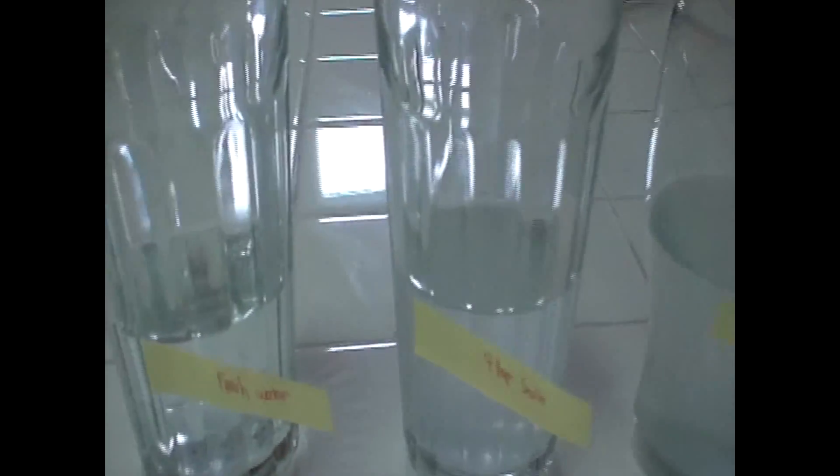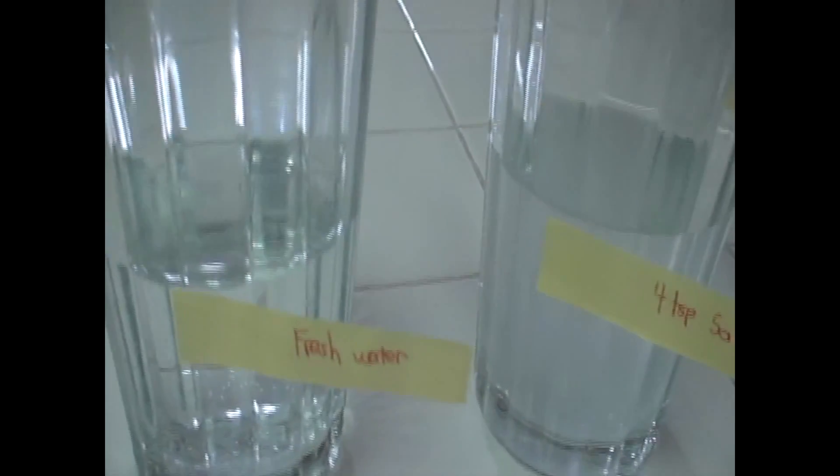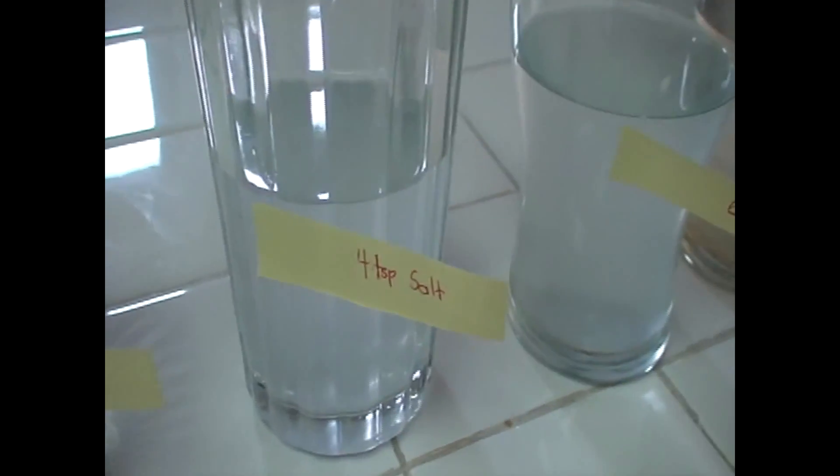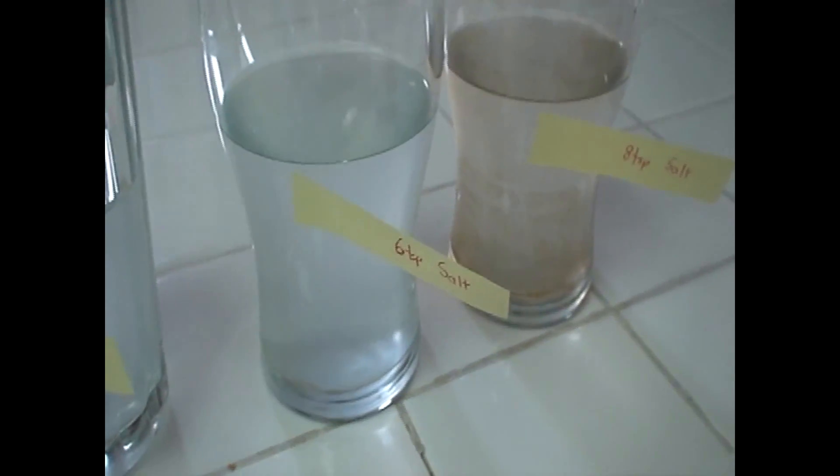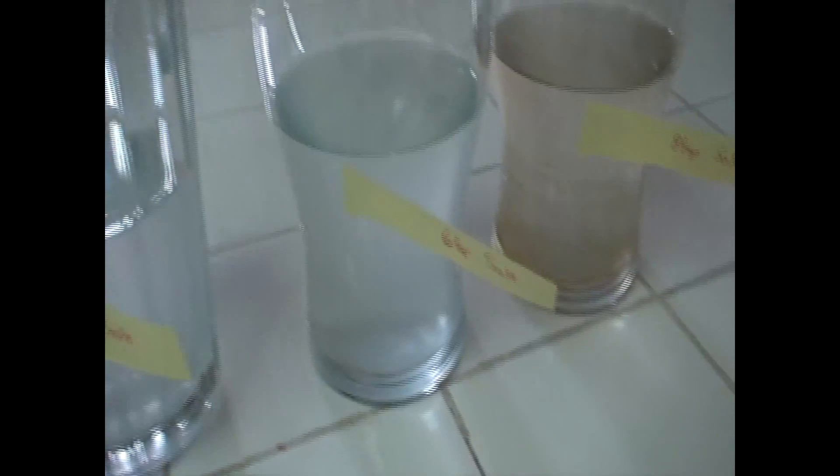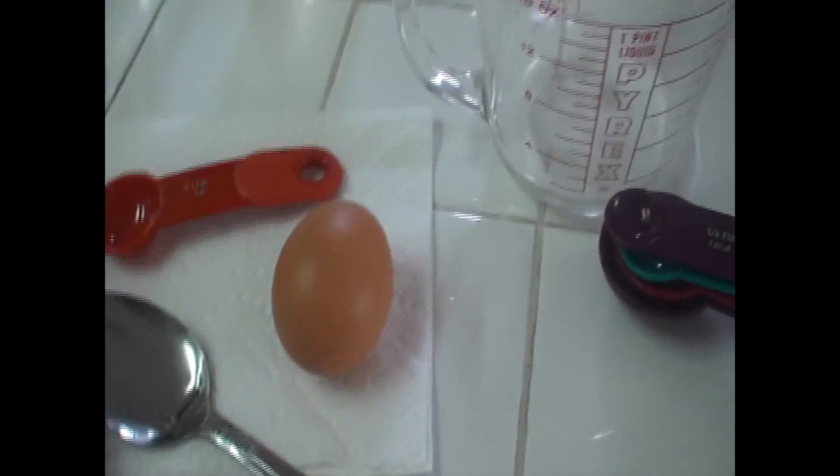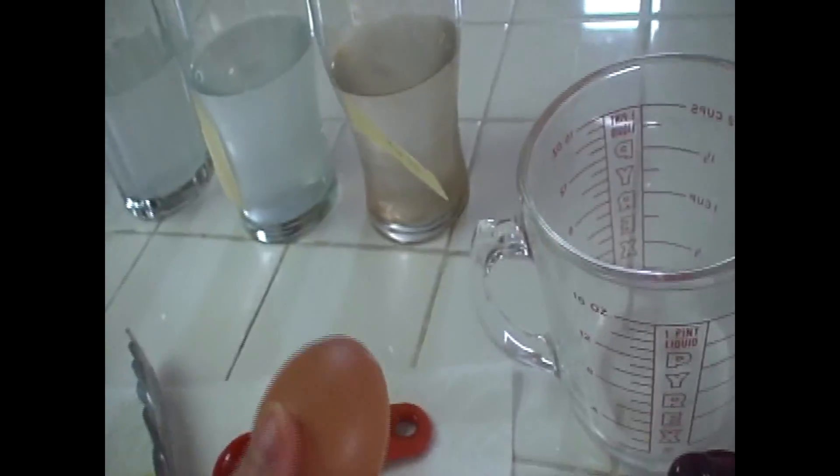This one is fresh water. This is four teaspoons of salt, not tablespoons, teaspoons, six teaspoons of salt and eight teaspoons of salt. So we're going to see if the amount of salt affects the density, which in turn might affect if this egg floats or not. So let's get started. And there's salt.